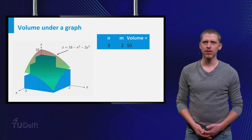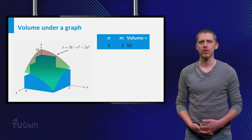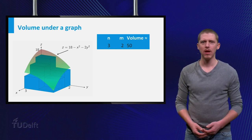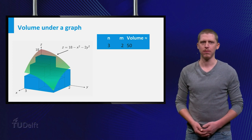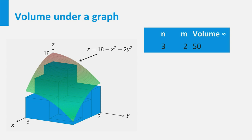This means that the volume of the solid, which lies under the graph of F and above the rectangle R, is approximately equal to 50. As you can see from the picture, we still have some room left between all 6 boxes and the graph of the function. This implies that our approximation of the volume is smaller than the exact value. We should expect that the estimate of the volume improves if the number of rectangles in the Riemann sum becomes larger.